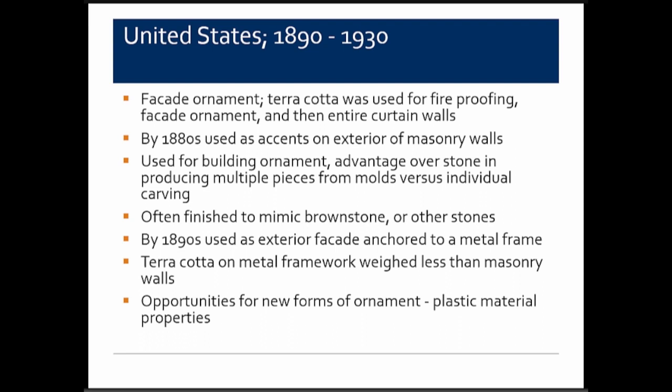From 1890 to about 1930, terracotta began to be used as ornament to accentuate building facades and as part of entire curtain wall systems. It had an advantage over stone in that multiple pieces could be produced from a single mold, making it more economical. It was initially used to mimic brownstone and other stones since glazes could be made to look like those materials. Units weighed less because they were hollow, and there was a new ability to use it as an ornamental system.